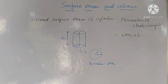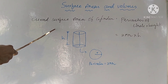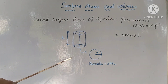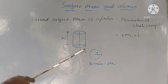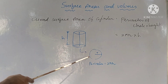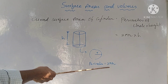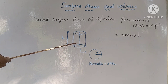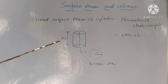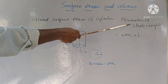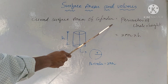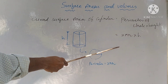Our first formula for the right circular cylinder is the curved surface area. The curved surface area of a cylinder equals the perimeter of the circle into height. The perimeter of the circle is 2πr, so the curved surface area formula is 2πrh.